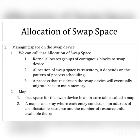The second point is that allocation of swap space is transitory — it totally depends on the pattern of process scheduling, because every time the kernel schedules processes in different patterns. The third point is that a process residing on the swap device will eventually migrate back to main memory, which happens when the process needs to continue execution and is completely migrated back.